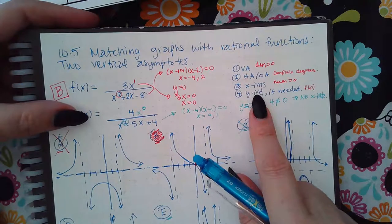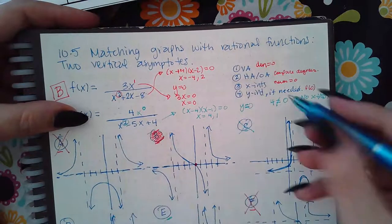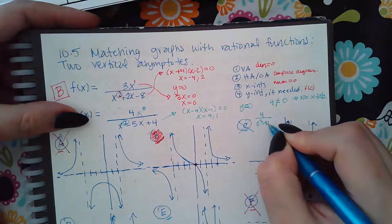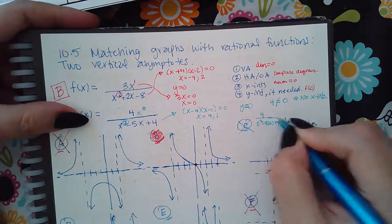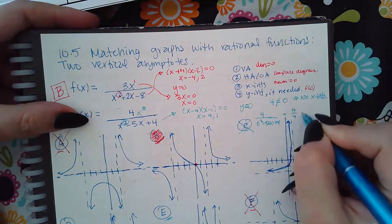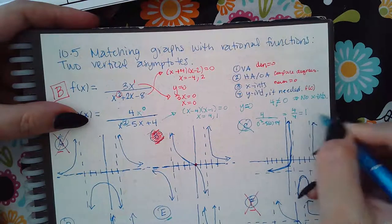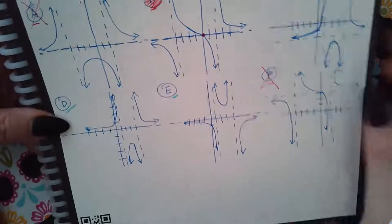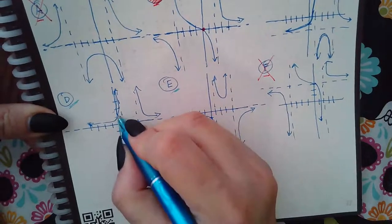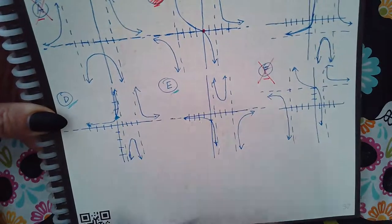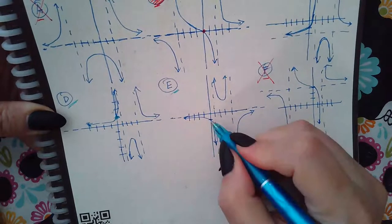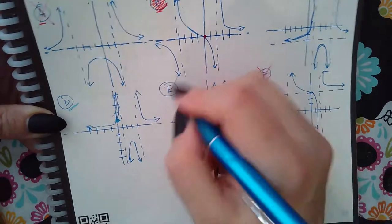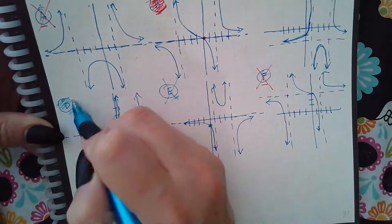To find the y-intercept I plug in zero for x: four over zero squared minus five times zero plus four gives me four over four, which equals one. So the y-intercept is one. Looking at graph D, it does have a y-intercept of one. Looking at graph E, it has a y-intercept of negative one. So E is not our graph — D is the answer for function g.